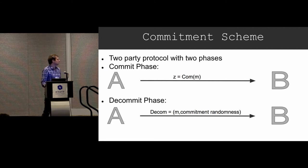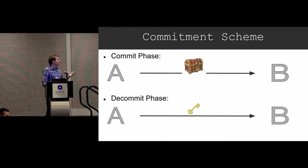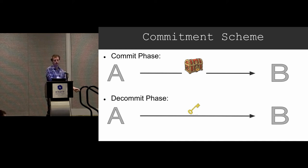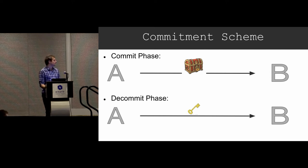In the decommit phase, you can think of it as she just sends all the randomness she used during the commit phase. The commit phase is going to hide her message. The security properties we want are two. We want binding, which says that once Alice puts her message inside the box and sends it, there's only one way she can open it — there's only one key she can send to Bob that will open the lock. And we want hiding, which says that until Alice sends the key to Bob, Bob doesn't know what's inside.